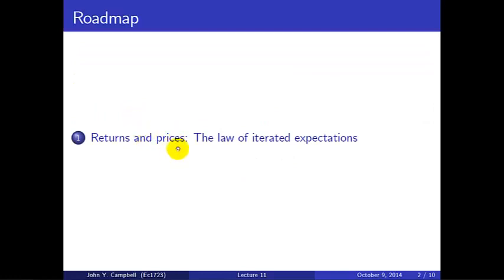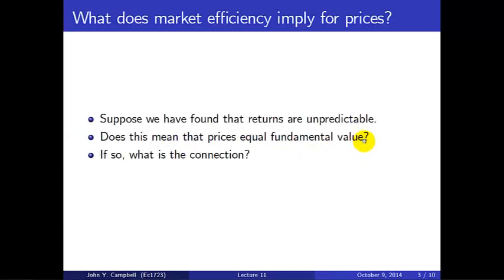We're going to be talking about the link between the returns on stocks from one period to the next and the price levels of those stocks. That's a big theme of this part of the course. The Law of Iterated Expectations is a mathematical result that helps us understand the connections between returns and prices. So the background question here is what does market efficiency imply for the levels of prices? Suppose we've done an extensive empirical analysis and we've found that returns are unpredictable. Does that imply that prices equal fundamental value in some sense? And if so, what is the connection?